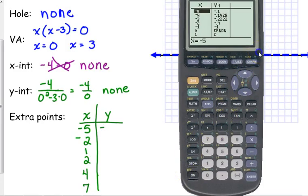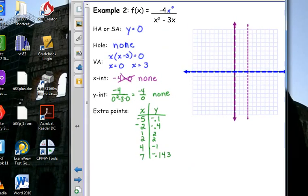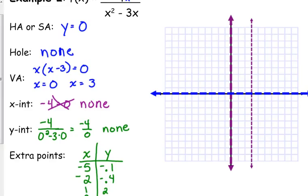All right. Negative five is negative 0.1. Negative two is negative 0.4. There's our vertical asymptote at zero. One is two. Two is two. There's our vertical asymptote at three. Four is negative one. And seven is negative 0.143. Yes. Bold and dashed.